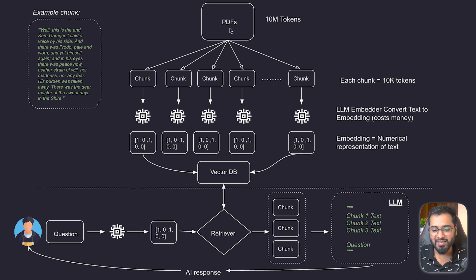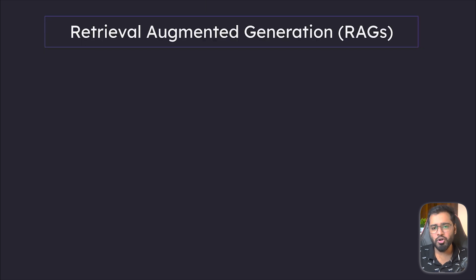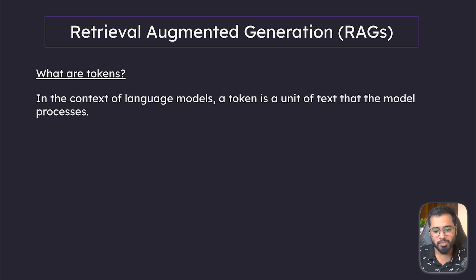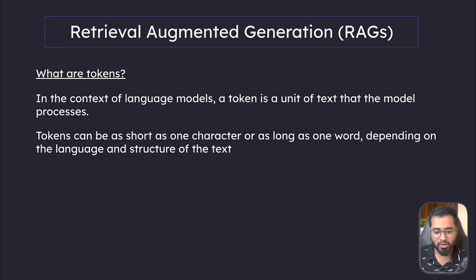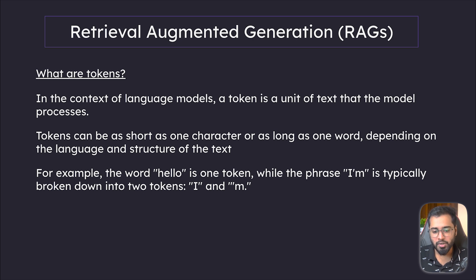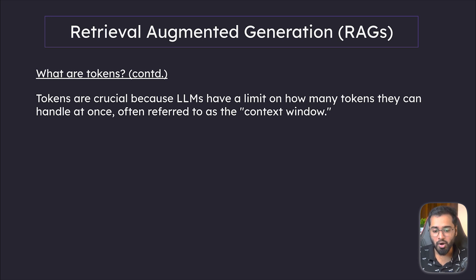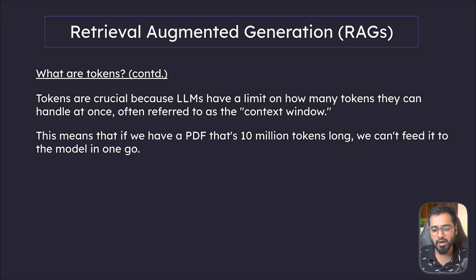So in the flowchart, you can see that there is a PDF that is insanely big — in other words, this is 10 million tokens long. If you do not know what tokens are, let's first understand that. So what is a token? In the context of language models, a token is a unit of text that the model processes. Tokens can be as short as one character or as long as one word depending on the language and the structure of the text. For example, the word 'hello' is one token, while the phrase 'I am' is typically broken down into two tokens — 'I' and 'am'. Tokens are crucial because LLMs have a limit on how many tokens they can handle at once, often referred to as the context window. This means that if we have a PDF that's 10 million tokens long, we cannot feed it to the model in one go.